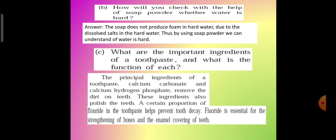What are the important ingredients of a toothpaste and what is the function of each? The principal ingredients of a toothpaste, calcium carbonate and calcium hydrogen phosphate, remove the dirt on the teeth. These ingredients also polish the teeth.